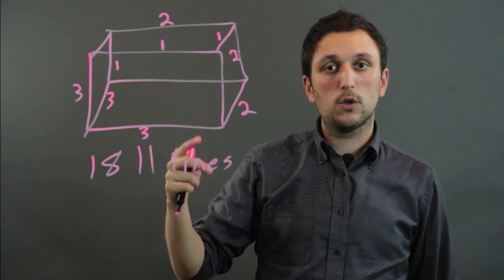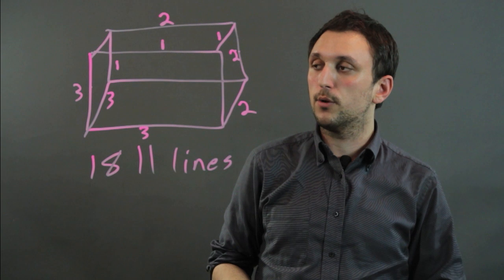So I'm Charlie Kesov, and you've just learned that there's 18 parallel lines in a rectangular prism. Thanks a lot.